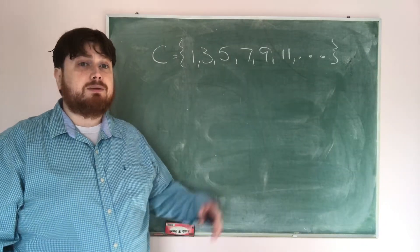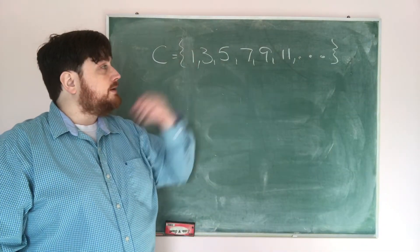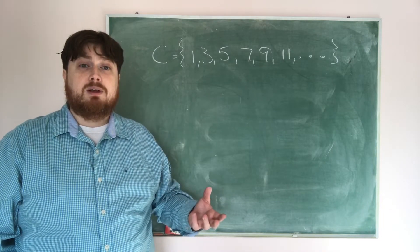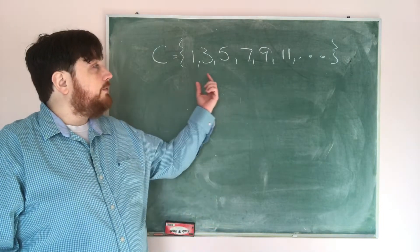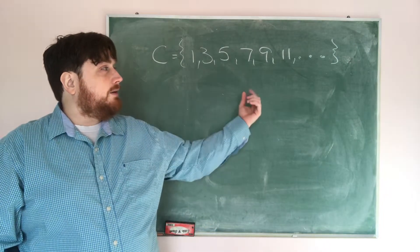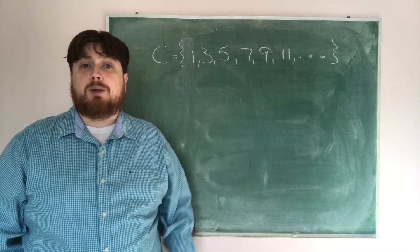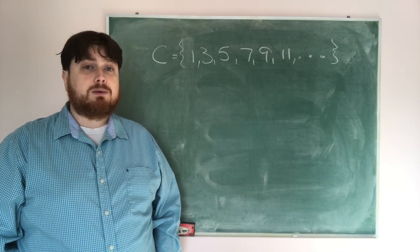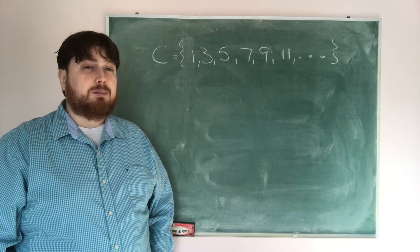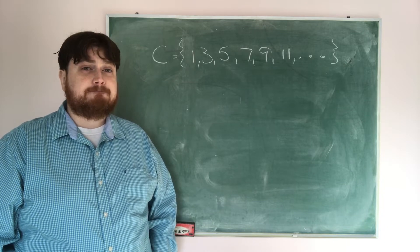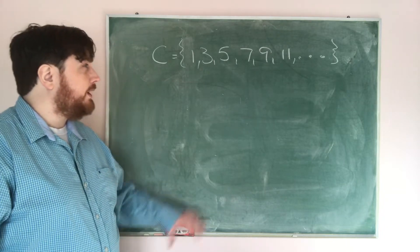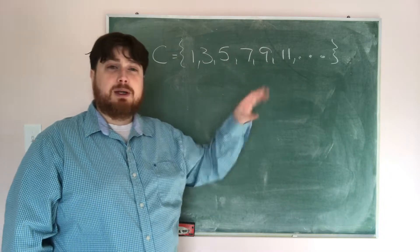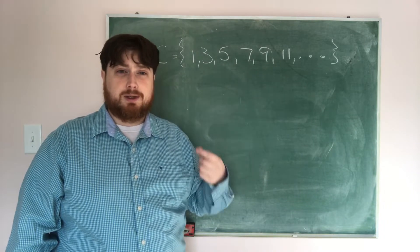Now let's suppose we're given a set in listing method and we want to write it using rule method. We're given the set {1, 3, 5, 7, 9, 11, ...} continuing that pattern indefinitely. What we want to do is find a rule that will define that pattern. I'm going to rewrite these so I can make use of what's going on here.